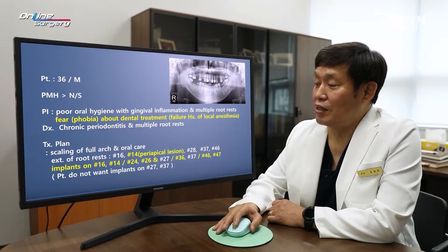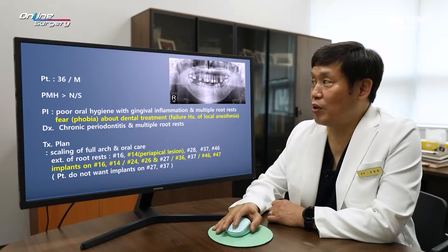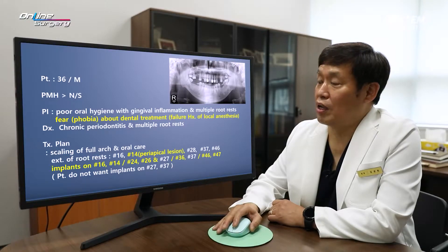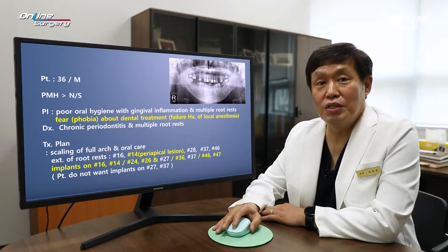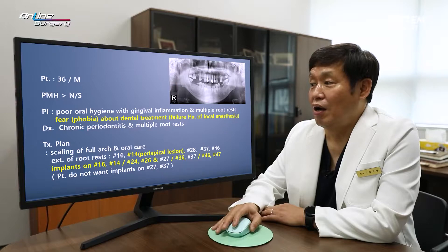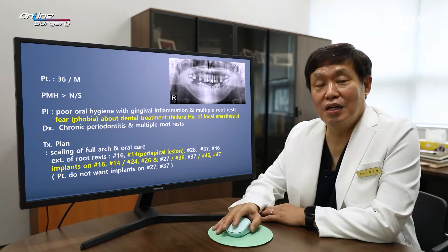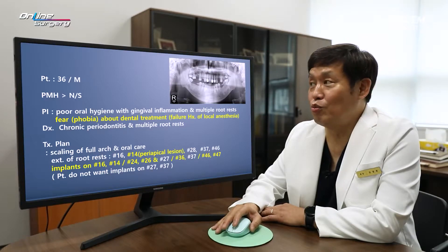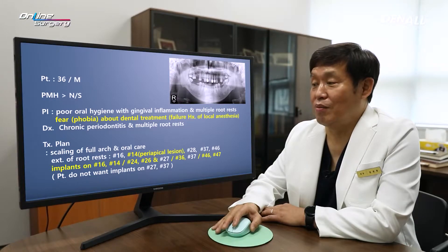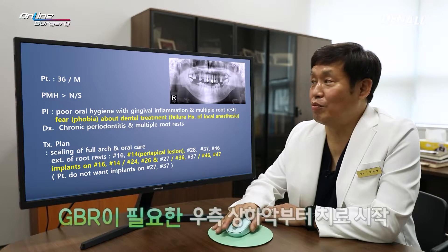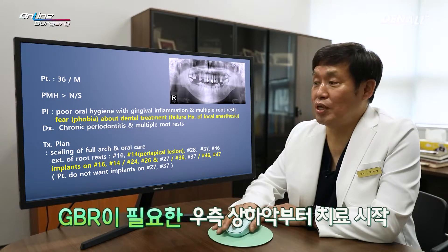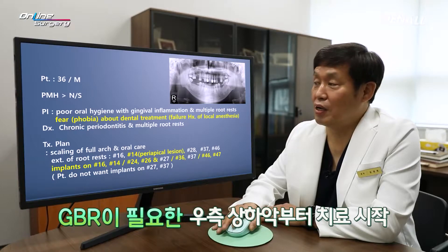In the upper, the implant was to be placed up to No. 26; in the lower, up to No. 36. On the right side, implants were to be placed in No. 46 and 47. Because the patient had significant fear of dental treatment, I originally planned one guide to place all implants at once, but instead we decided to do the upper and lower on the right side first. In the case of No. 14 and 16, I suspected the necessity of GBR.